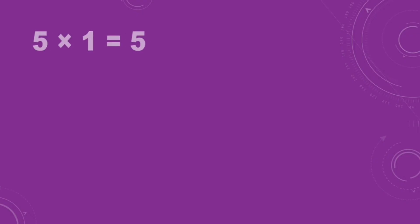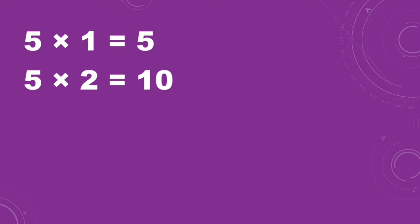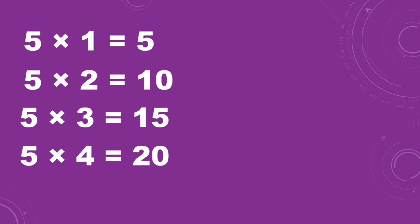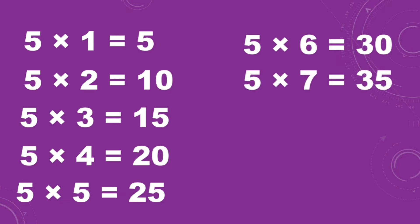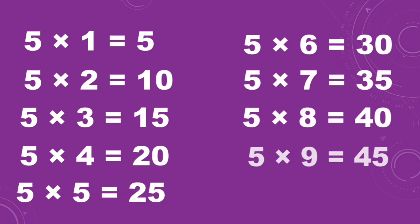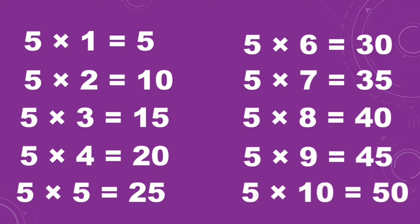Five ones are five, five twos are ten, five threes are fifteen, five fours are twenty, five fives are twenty-five, five sixes are thirty, five sevens are thirty-five, five eights are forty, five nines are forty-five, five tens are fifty.